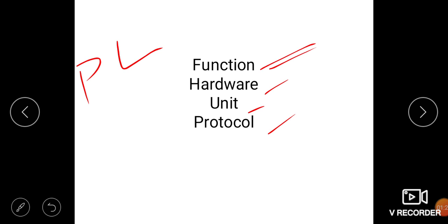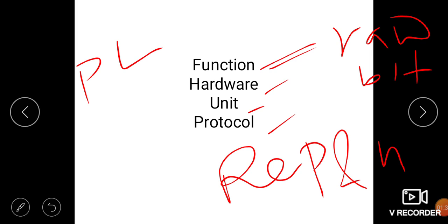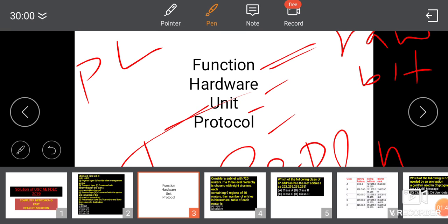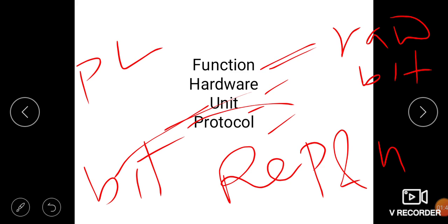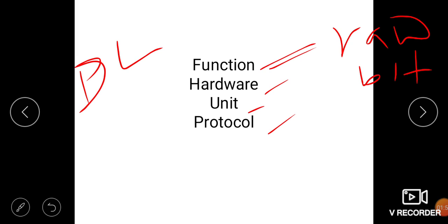The physical layer is always related to raw bits. The hardware used is repeater and hub. The data unit is raw bits — it is always concerned with bits.